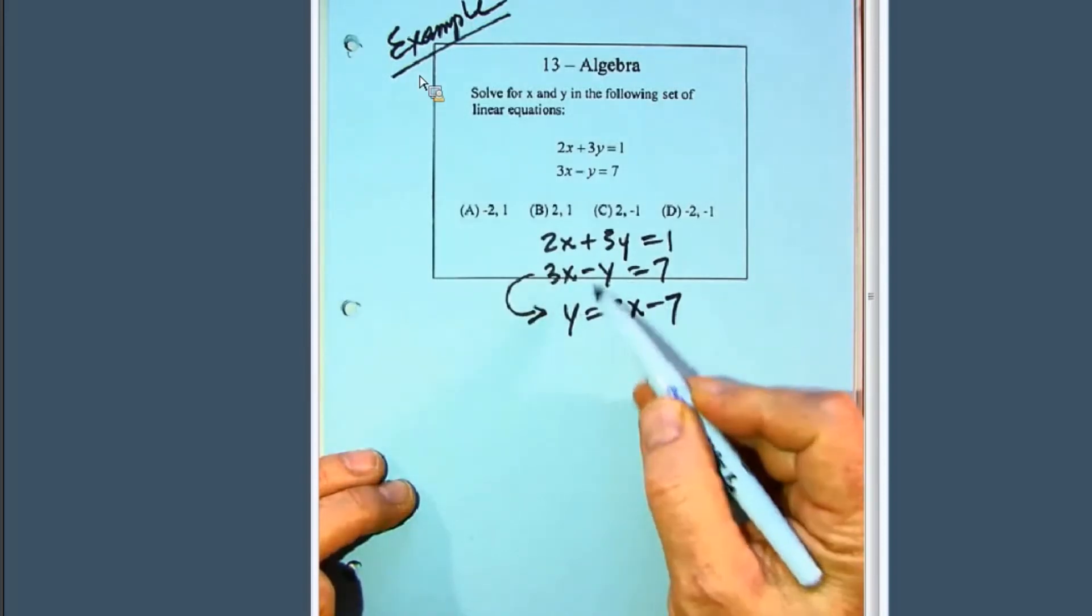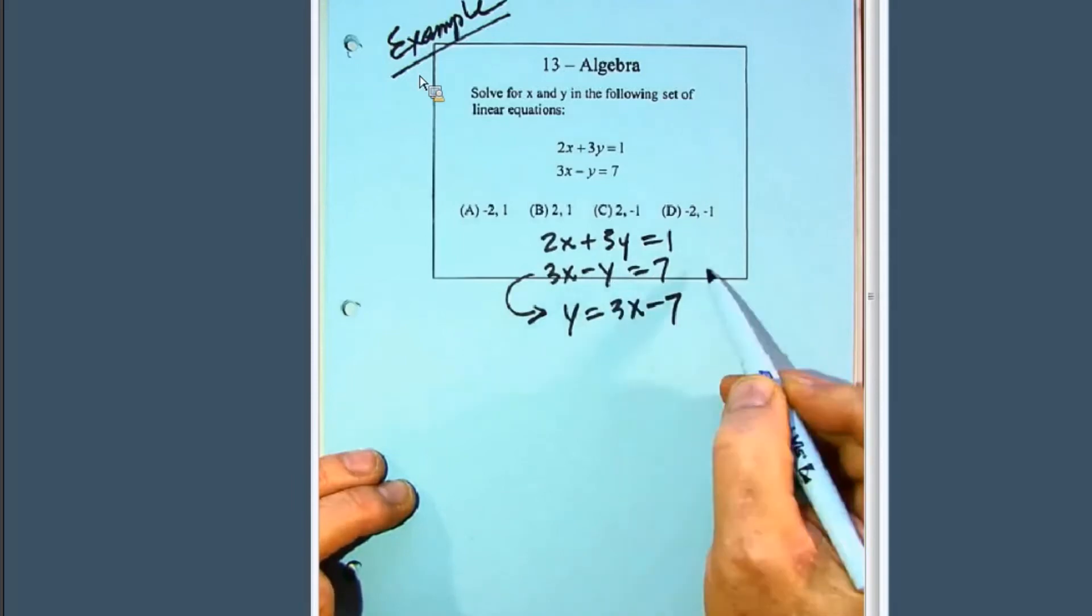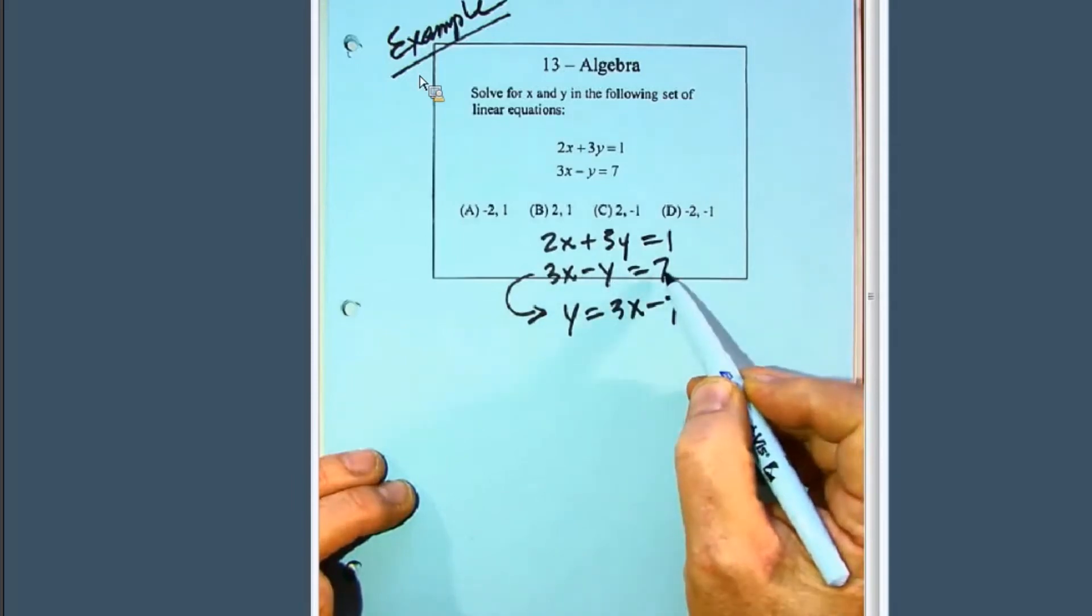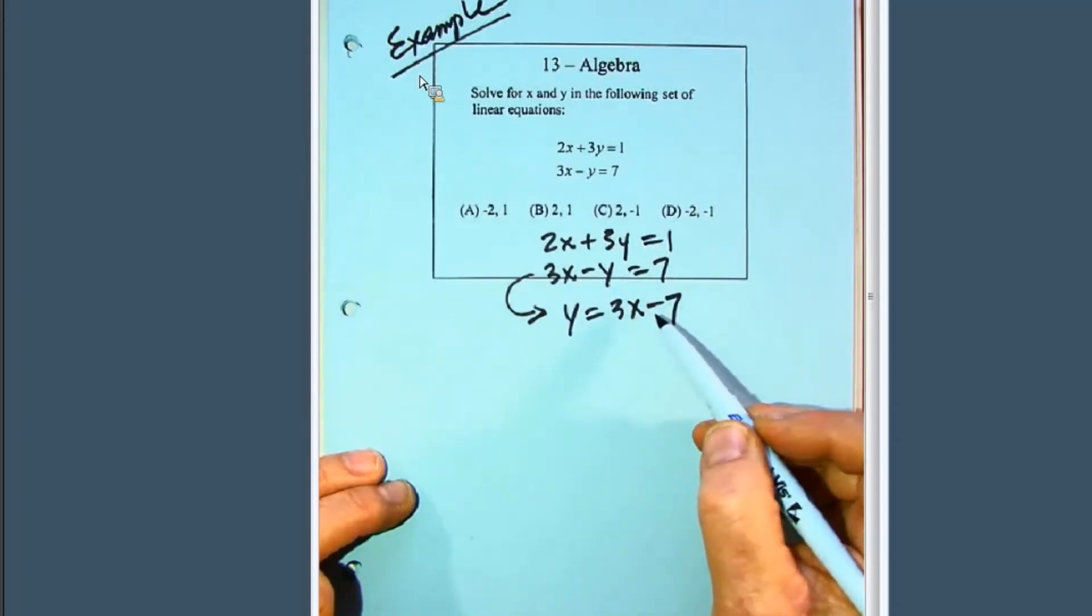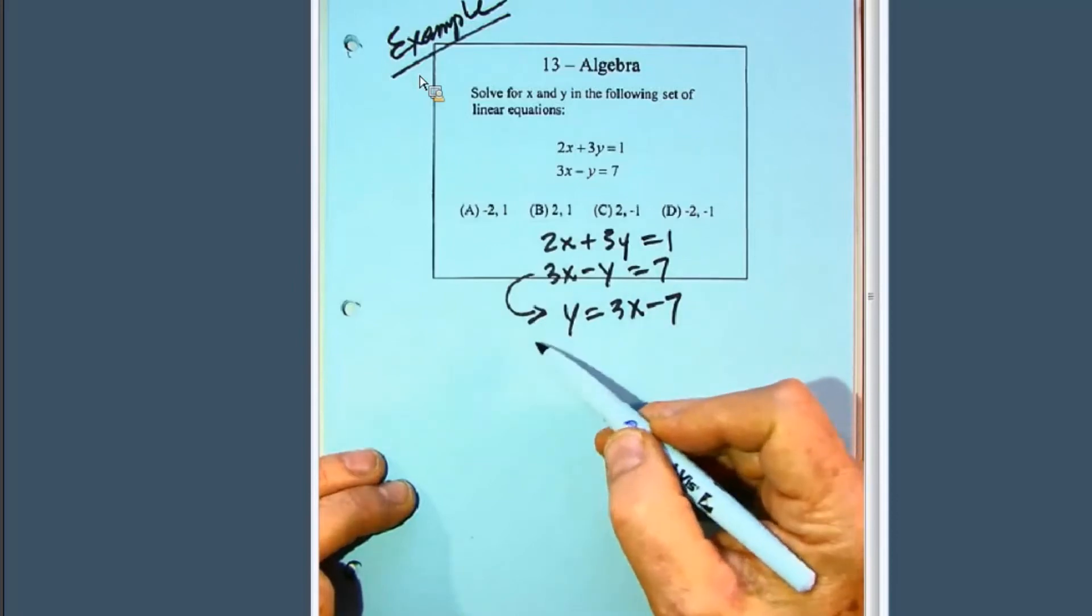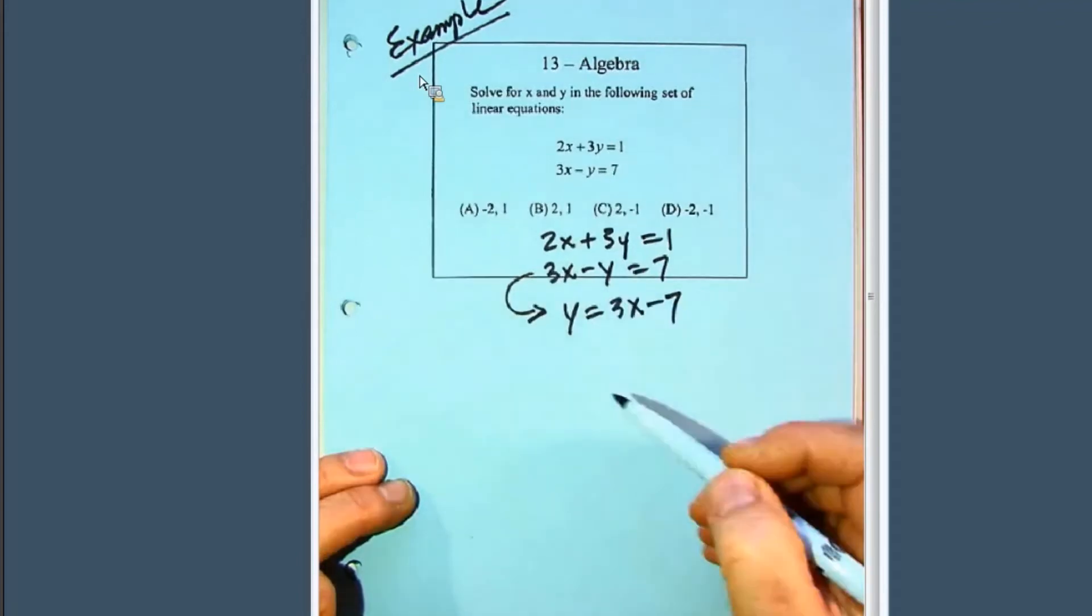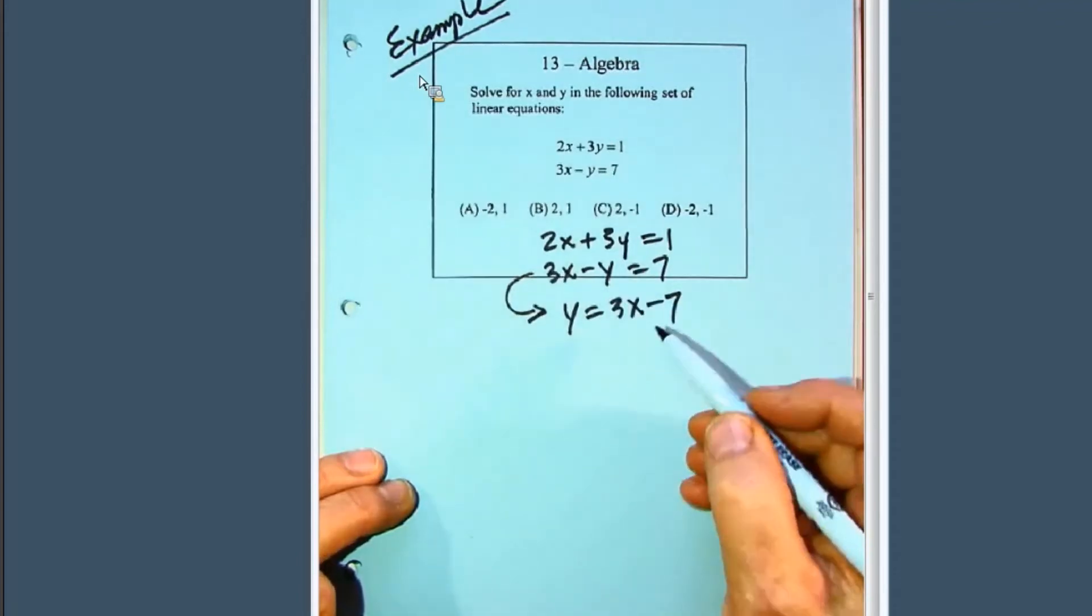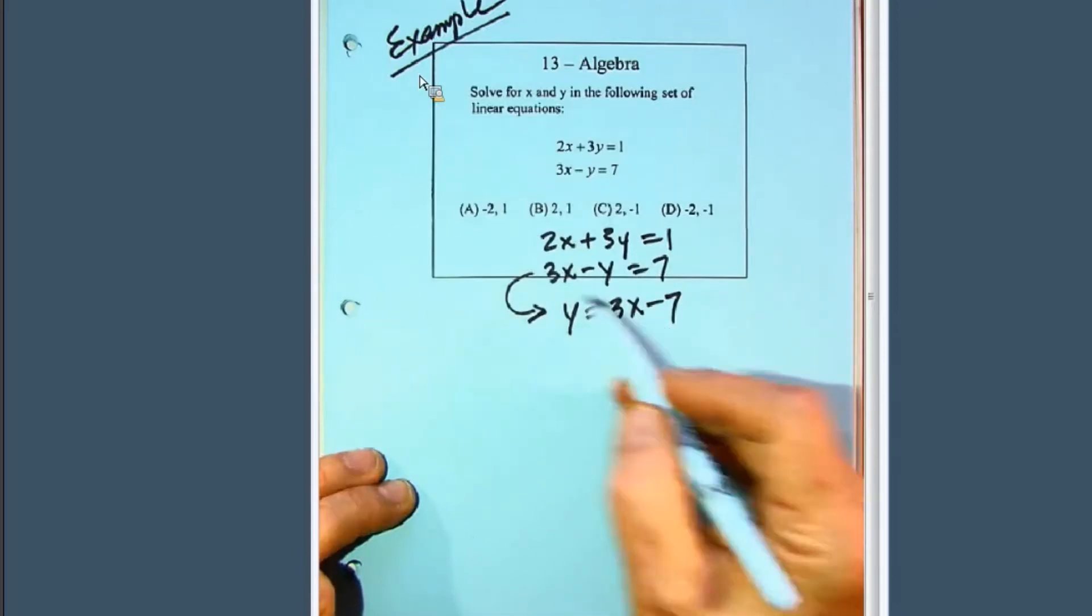So in other words, what we did there is, there's several algebra steps here. We added y to both sides, so that put it over here. We subtracted 7 from both sides, so we have 3x minus 7. And then instead of having the y on the right-hand side and the 3x minus 7 on the left, we can just flip about the equals. So there's a couple of algebra steps in here that I'll let you verify, but it is y is equal to 3x minus 7.